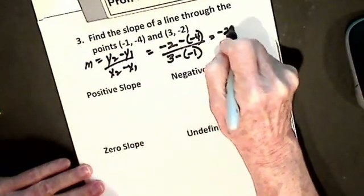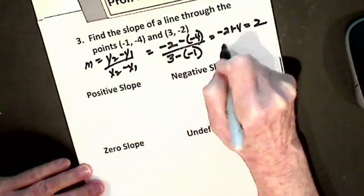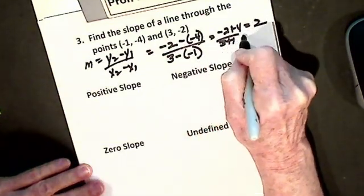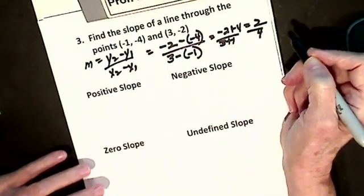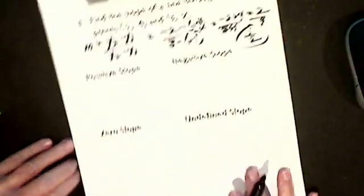I get minus two plus four, I'm going to get a two. I get three plus one, I'm going to get a four. All fractions have to be simplified, so my slope's positive one half.